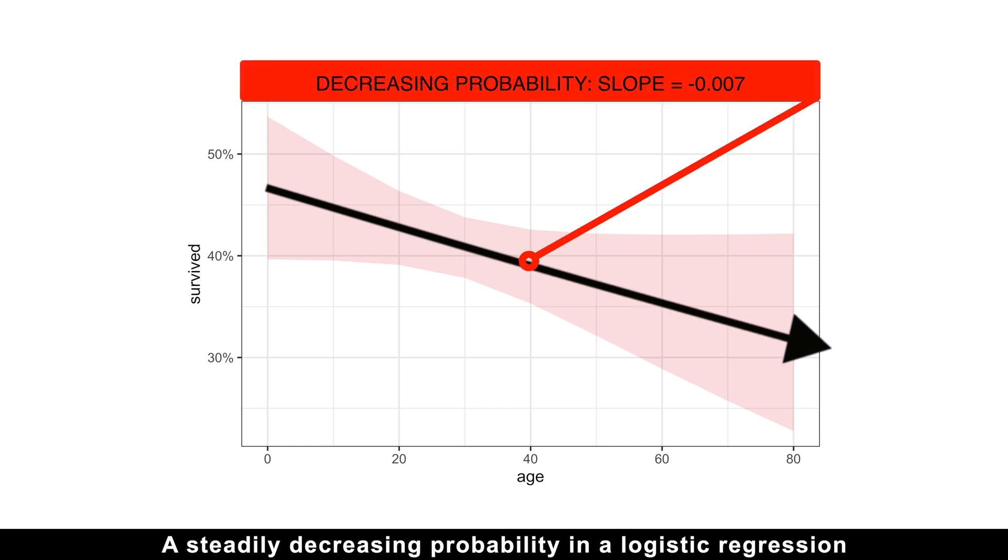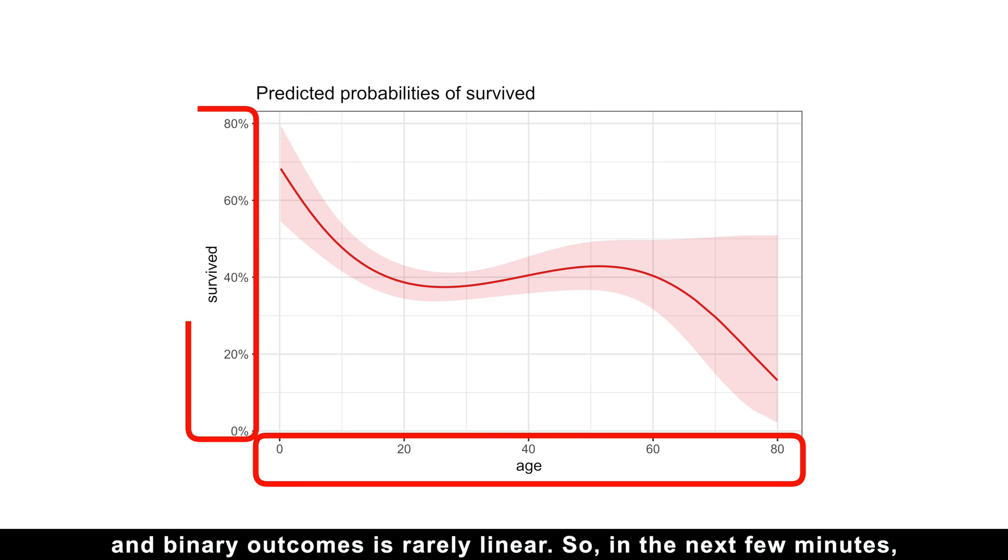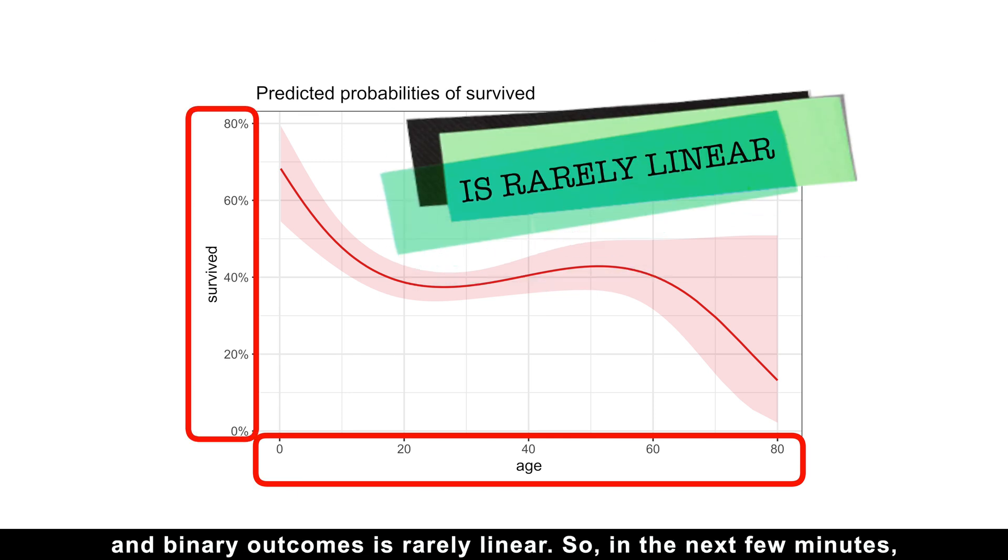A steadily decreasing probability in a logistic regression with a numeric predictor is straightforward to interpret. However, in reality, the relationship between numeric predictors and binary outcomes is rarely linear.